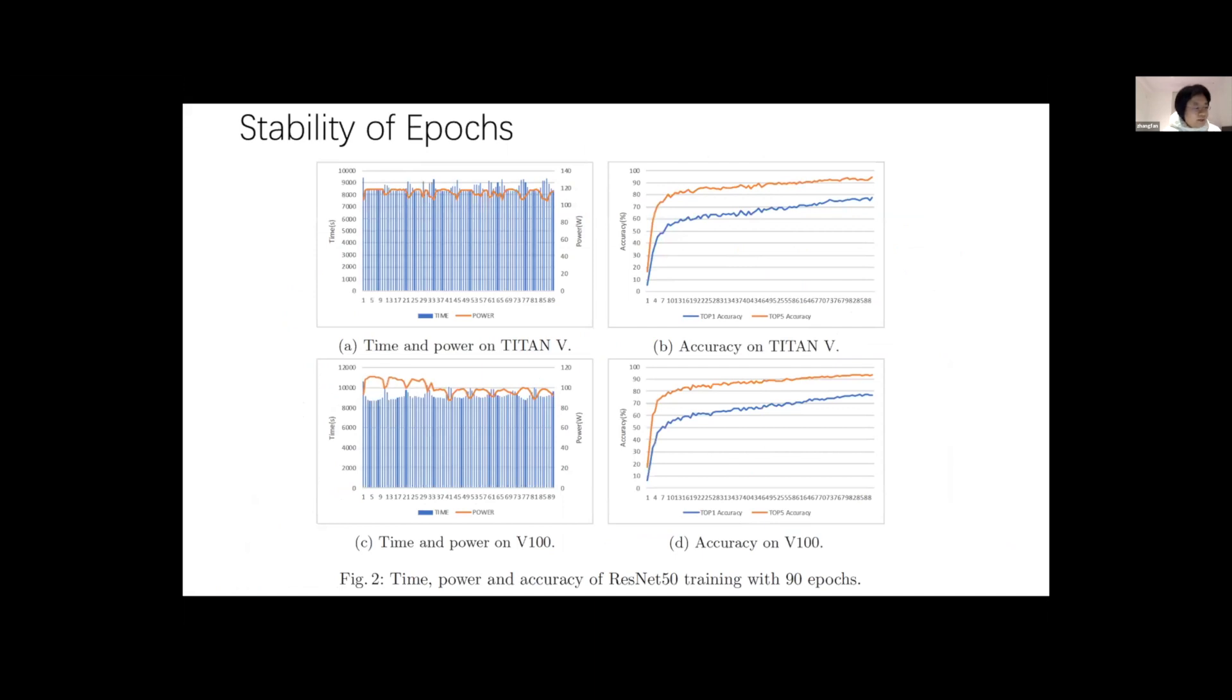First, to verify that one epoch is representative of the whole training, we take ResNet as an example to illustrate the stability of epochs for the complete training procedure. And we use coefficient of variation to evaluate the stability. And we can see that during the training, the accuracy is increasing, while the time and the power of each epoch remains stable. And our results show that the coefficient of variation of each epoch's time and power is less than 6.5 percent, which is very stable.